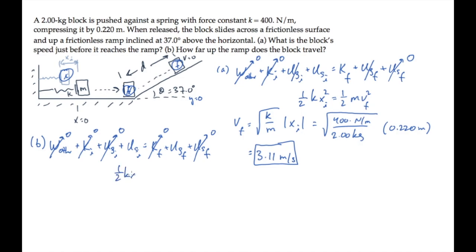We end up converting spring potential energy into gravitational potential energy. Solving for the final height yf and substituting all the numbers, we find that the block's final height is 0.494 meters.